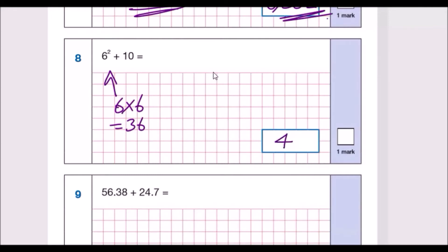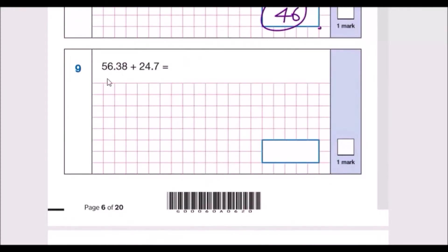Question 9: 56.38 plus 24.7. This one is easy, just a bit long. Again, line up the decimals. Always line up your decimals, so you've got 56.38 and you've got 24.7. And if you've got a gap, just put a 0. Always never leave your gaps empty, just always put a 0 in. So now we have to add them and line up your decimal place here. So you've got 8 plus nothing is 8, 3 plus 7 is 10 so 0 carry the 1, 6 and 4 is 10 plus 1 is 11 carry the 1, 5 and 2 is 7 plus 1 is 8.